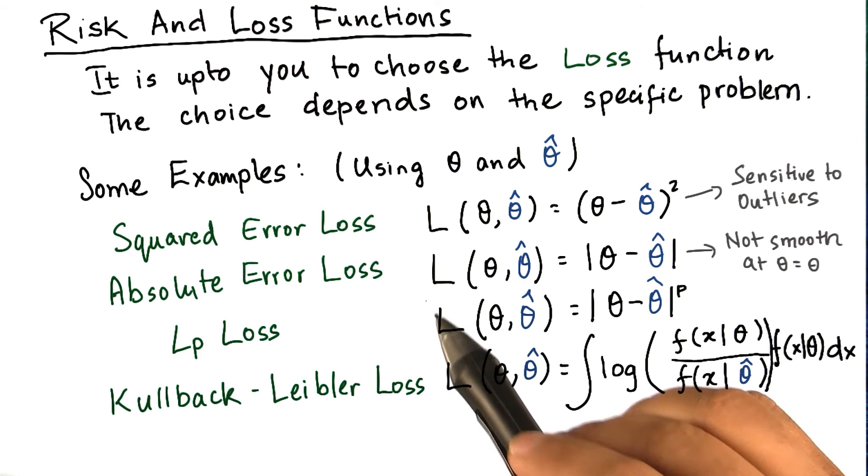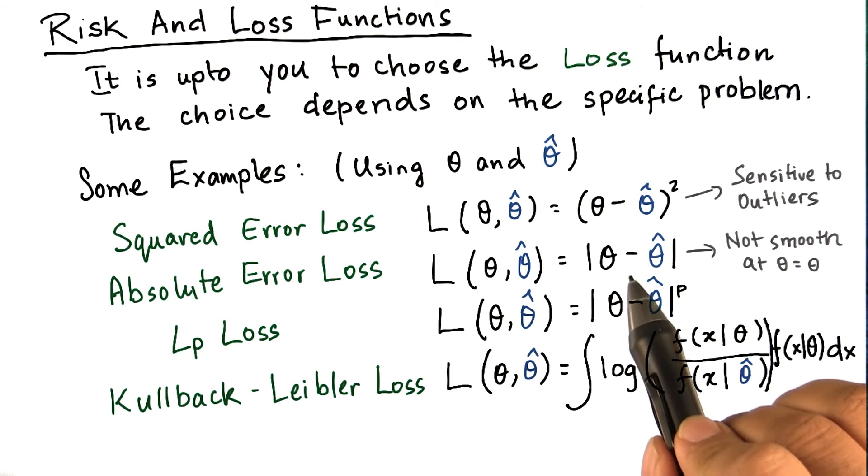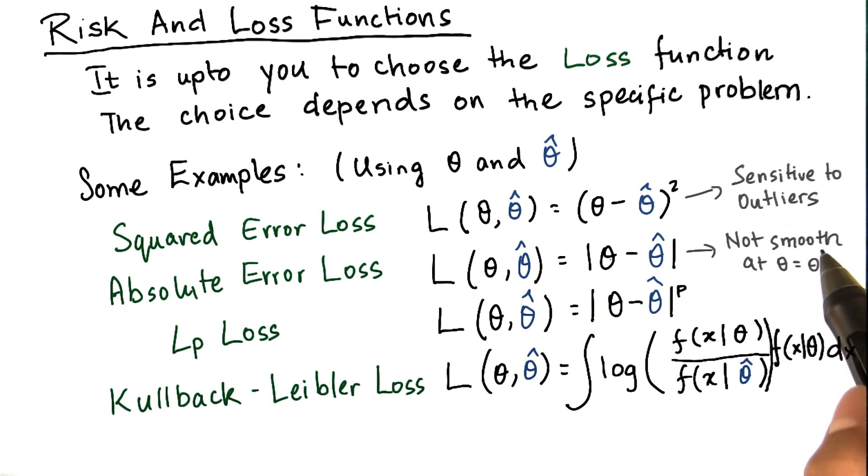The absolute error loss is not so sensitive to outliers. However, it is not smooth at the value where theta hat is exactly equal to theta, and thus it's difficult to differentiate it at that point.